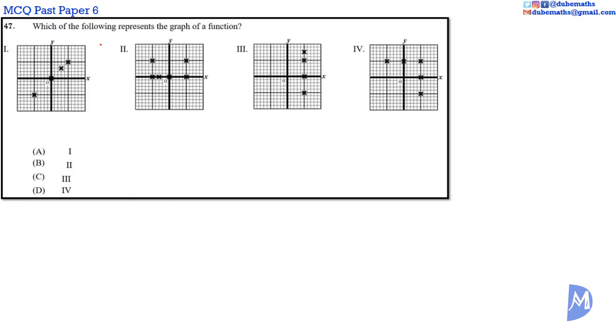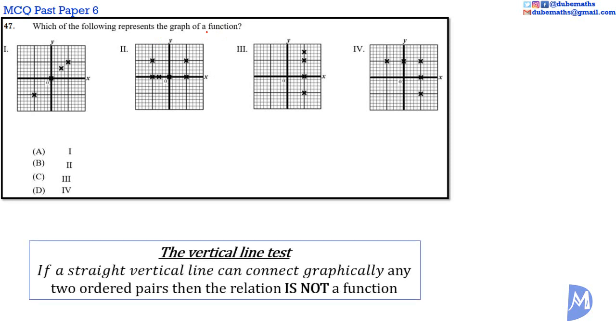Question 47. To determine which diagram is the graph of a function, we use the vertical line test. The vertical line test says that if a straight vertical line can connect graphically any two ordered pairs, any two points on the graph, then the relation is not a function. We see that straight vertical lines can connect points on 2, 3, and 4. Therefore, none of these are functions. The answer is A.